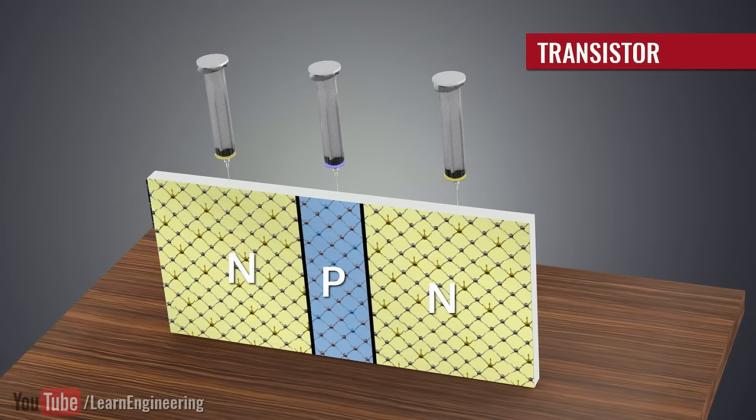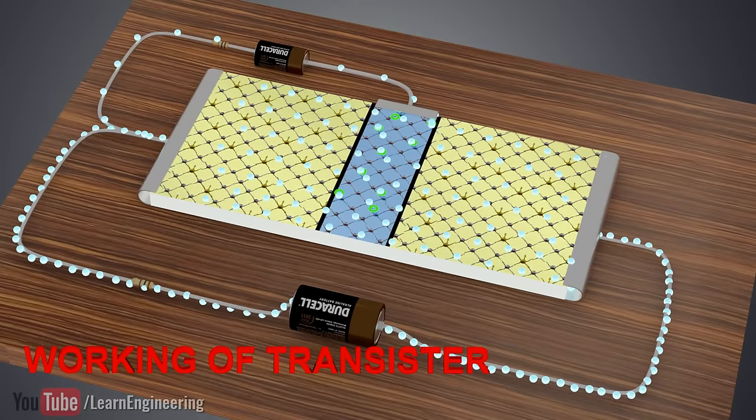If you dope a silicon wafer in the following manner, a transistor is born. But if you really want to understand how a transistor works, we have to get a clear idea of what happens at the electron level of a more basic component, a diode.